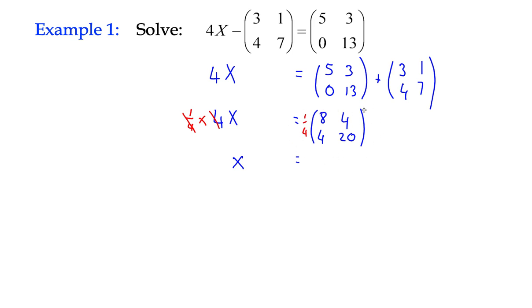What have we got then? This is the idea of scalar multiplication as I just said above. If we're multiplying the whole matrix by the number 4 or a quarter, then we can apply that to every element inside. So every element gets divided by 4 or multiplied by a quarter. We end up with a quarter of 8 is 2, a quarter of 4 is 1, a quarter of 4 is 1, and a quarter of 20 is 5. So my matrix X has the elements 2, 1, 1, and 5.